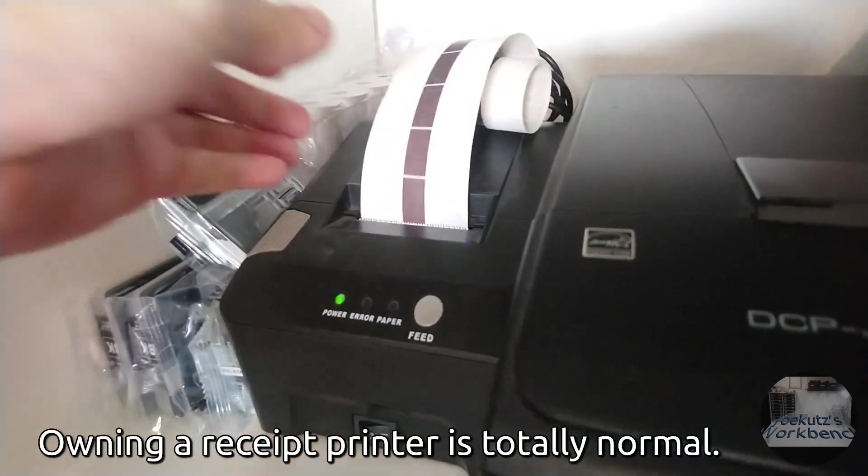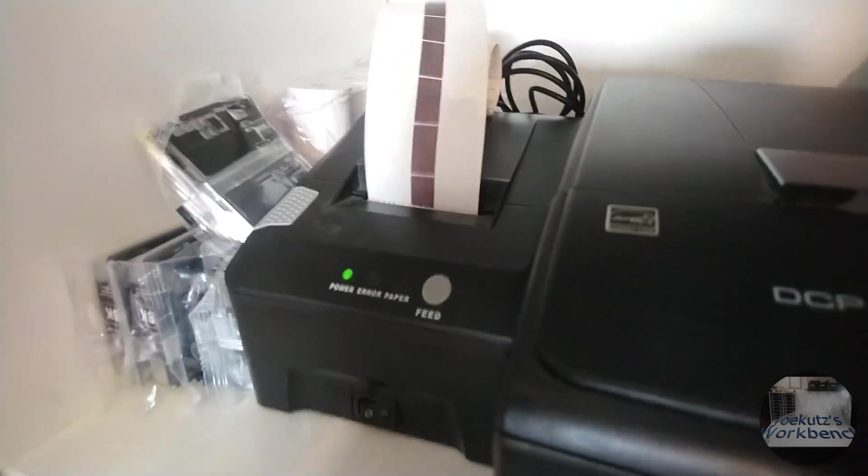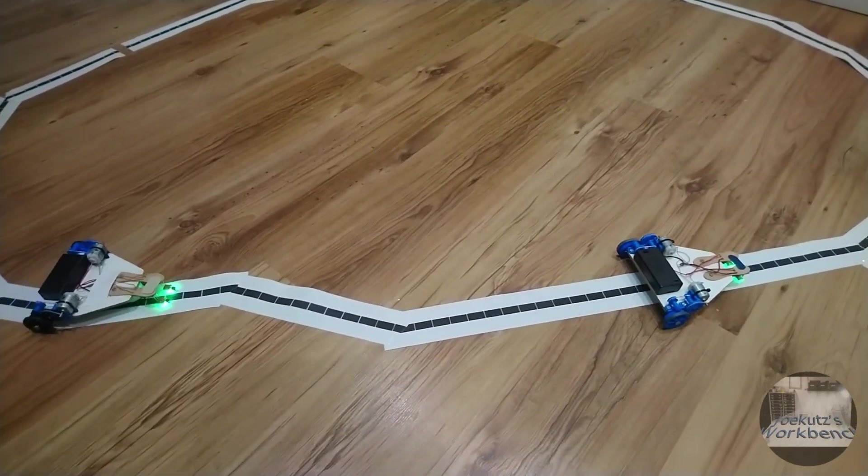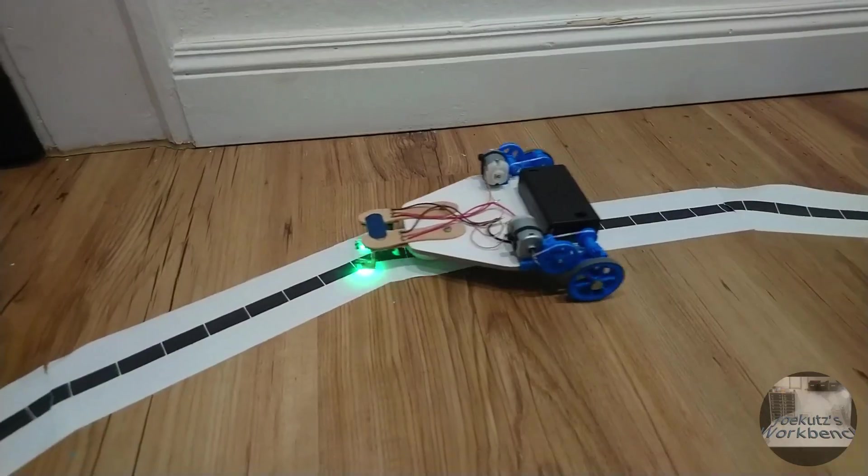As somebody who owned a thermal receipt printer, creating a half black line was easy too. And the vehicles can follow it surprisingly reliable, as long as the bends in the line are not too sharp.